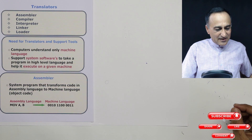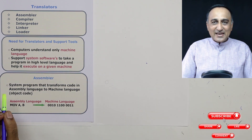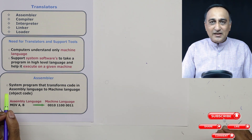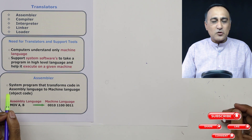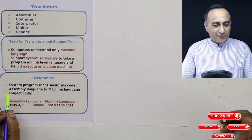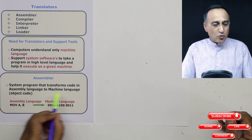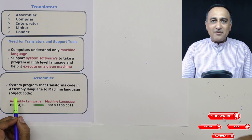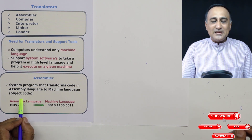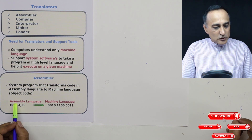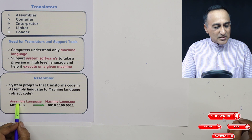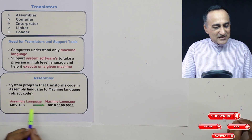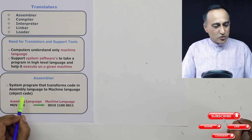Let's understand what an assembler is. An assembler is a system software written only for a specific hardware architecture — you cannot write an assembler for an ARM machine and expect it to work on an Intel or AMD processor, because the hardware design and architecture is quite different. It transforms code written in assembly language to machine level language, also known as object code. For example, the instruction 'MOV A, B' copies the contents of B to A, and the assembler converts this into machine language instructions.